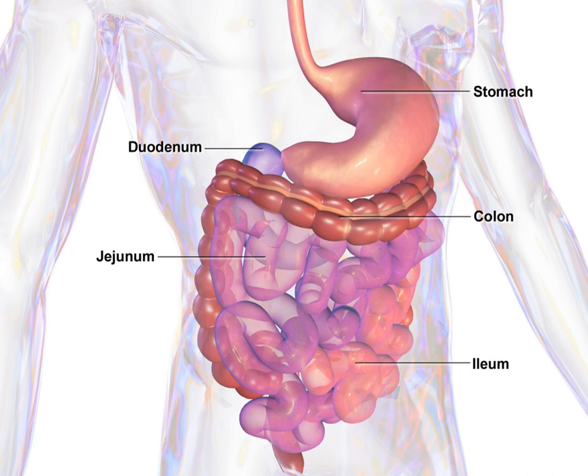The gastrointestinal tract, digestive tract, GI tract, GIT, gut, or alimentary canal is an organ system within humans and other animals which takes in food, digests it to extract and absorb energy and nutrients, and expels the remaining waste as feces. The mouth, esophagus, stomach and intestines are part of the gastrointestinal tract. Gastrointestinal is an adjective meaning of or pertaining to the stomach and intestines. A tract is a collection of related anatomic structures or a series of connected body organs.